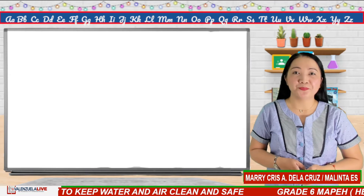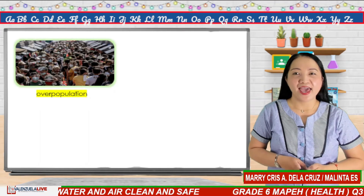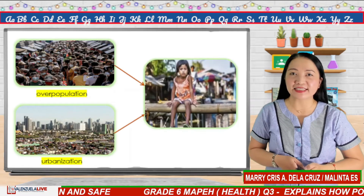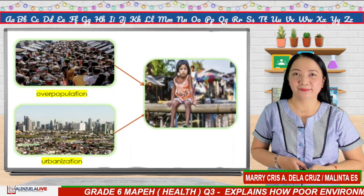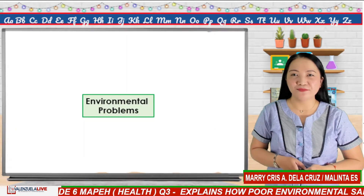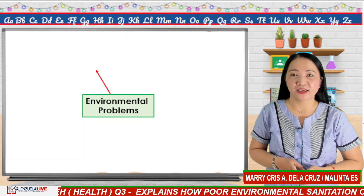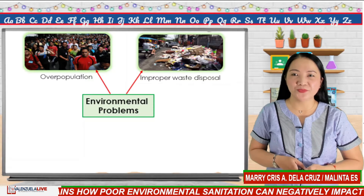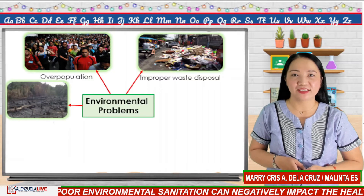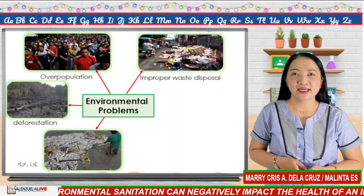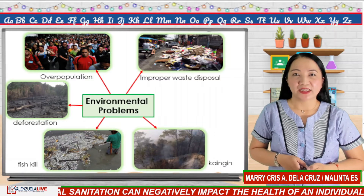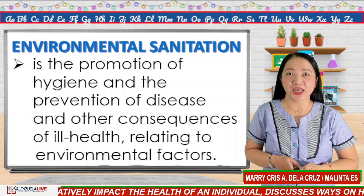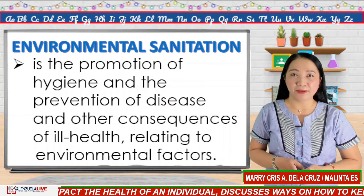With the rapid growth of population and excessive urbanization, the environmental health of the country is threatened, affecting mainly the people. Environmental problems like overpopulation, improper waste disposal, and destructive human activities such as deforestation, fish kill, kaingin, dynamite fishing, and uncontrolled toxic chemicals released on water and air will surely threaten the health of the people in the community.